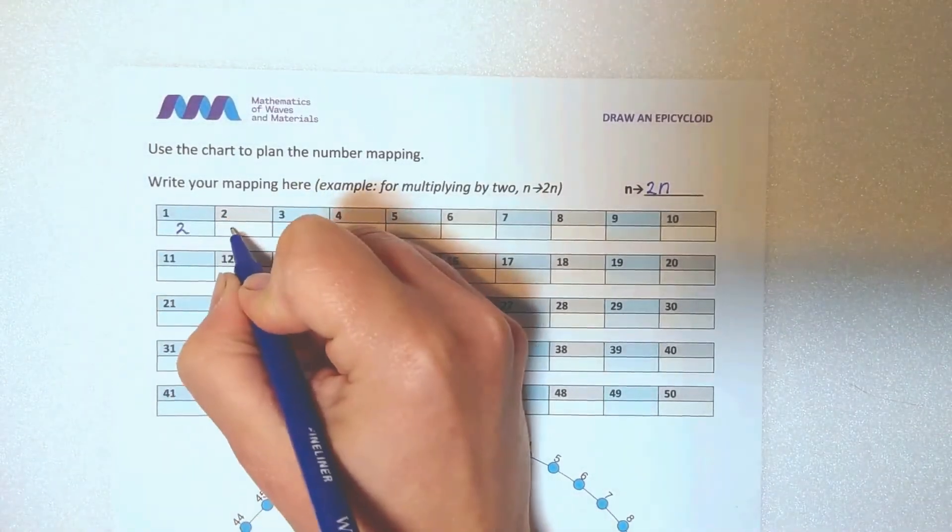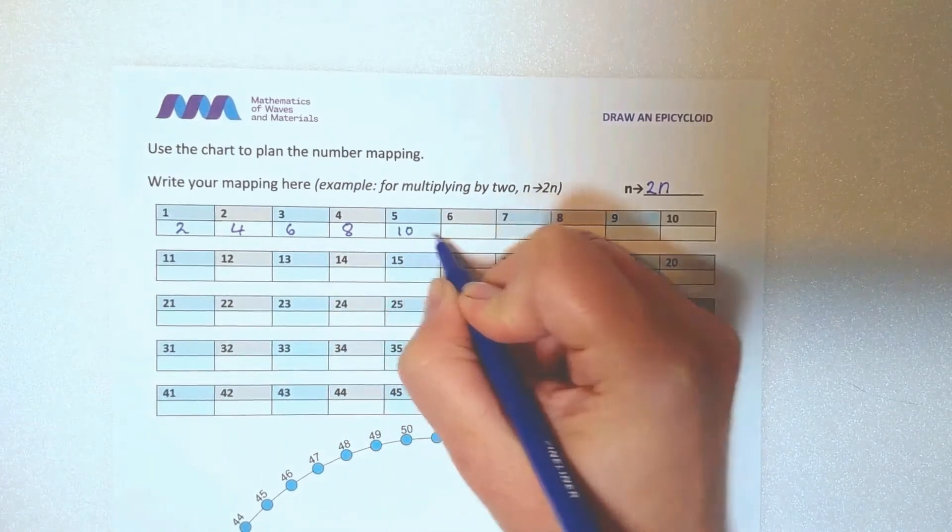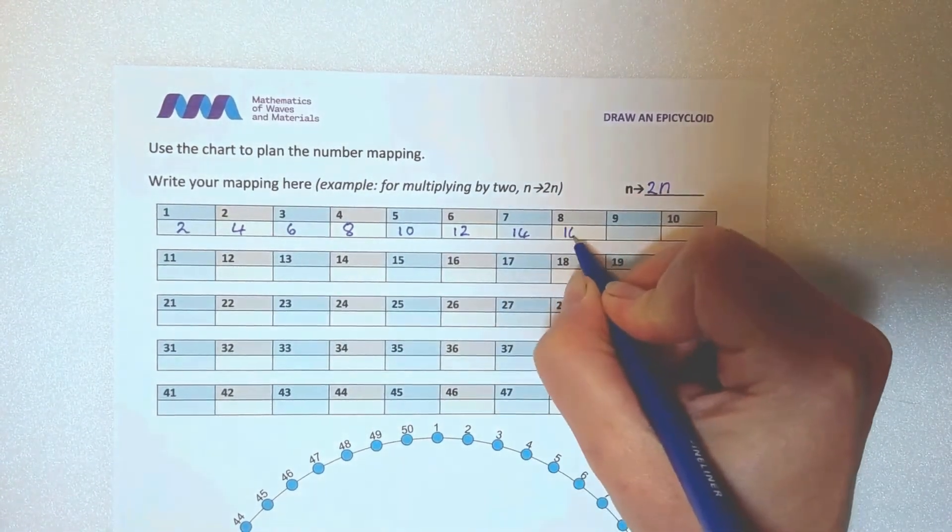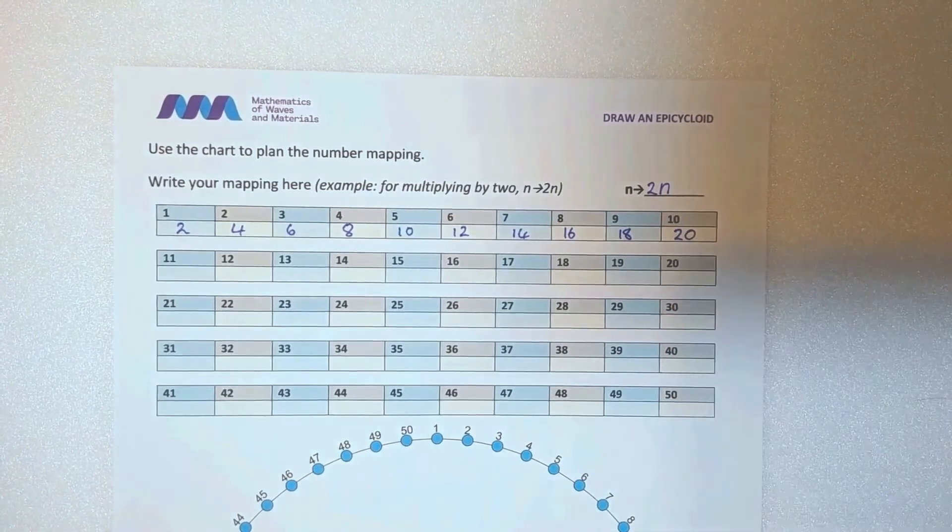If you want to draw a cardioid, you will join each point to a point 2 times its number value. We say we are mapping point n to point 2n or 2 times n. I am using the 50 point template.